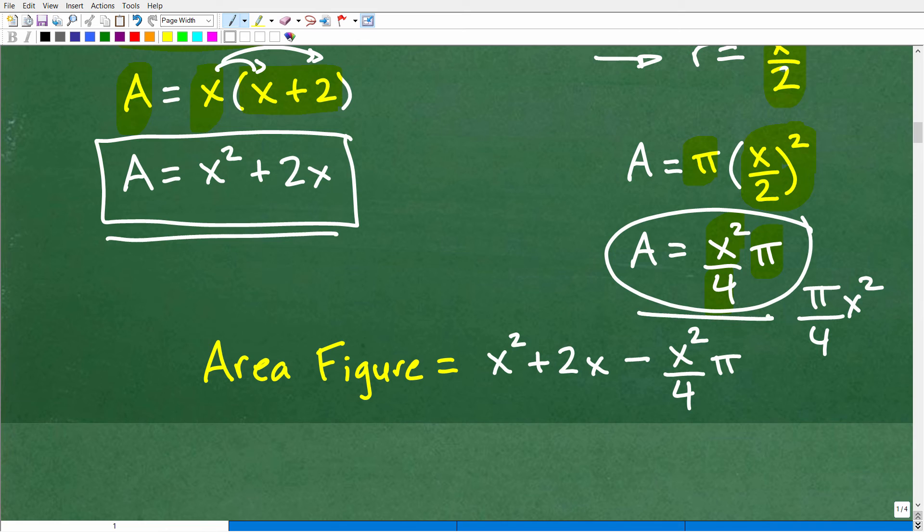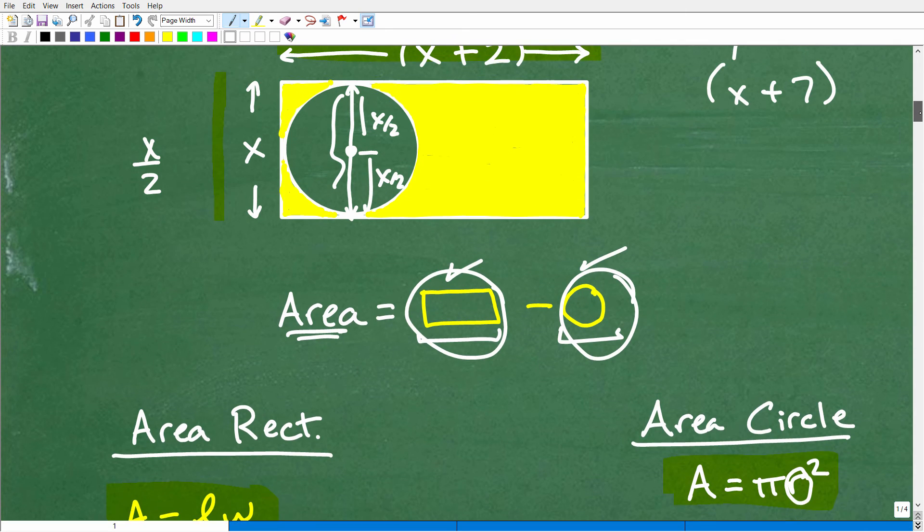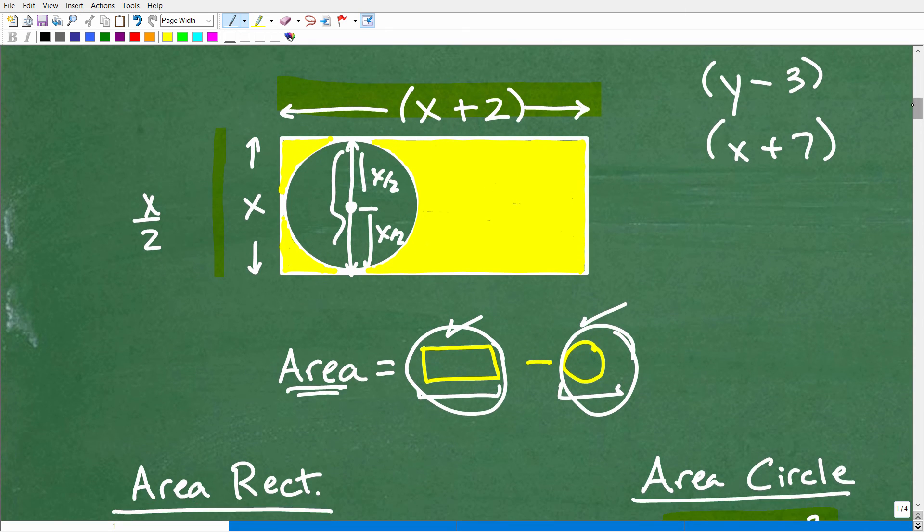So here's our rectangle, and here's our circle. So we're going to subtract away the circle from the rectangle. And this right here, this entire expression, would be the area for that yellow figure in terms of X. It's basically like a formula for the area of this particular figure right there.